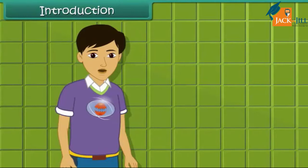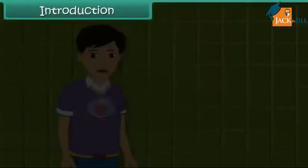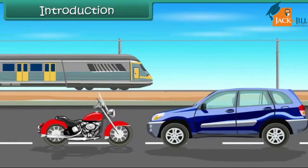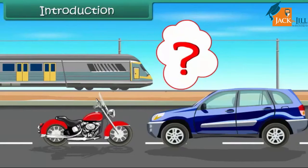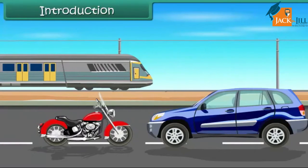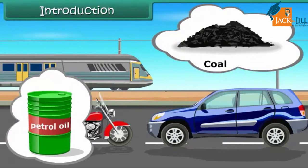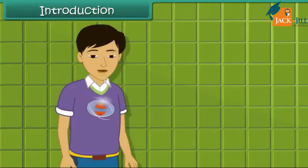Hi friends, we can see so many vehicles like bikes, cars, trains etc. all running around us. They don't eat any food like living beings do. Then how do they get their energy? They get their energy from fuel. The fuel can either be coal or a petroleum product. They provide energy for vehicles to move. In this module, we are going to learn more about these natural energy resources.